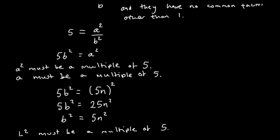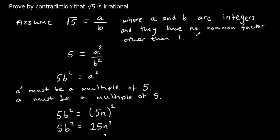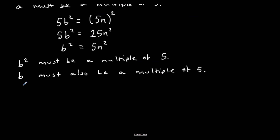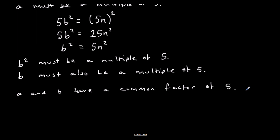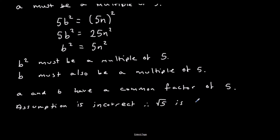So A and B are both multiples of five, but we assumed they have no common factor other than one — that's a contradiction. A and B have a common factor of five. So our assumption is incorrect, and we've found our contradiction. Therefore, root five is irrational.